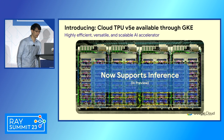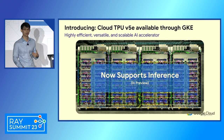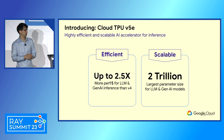As we just announced at Next, we now have TPU V5E in preview. This further enables customers to pursue these transformative opportunities in AI/ML, the same way Google has done for our own products and services. The two main benefits we expect customers to enjoy from TPUs are: one, efficiency, and two, scalability.